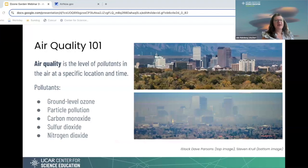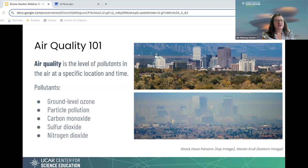Air Quality 101: what is air quality? It is the level of pollutants in the air at a time and location. The EPA in the United States tracks ground-level ozone, particle pollution, carbon monoxide, sulfur dioxide, and nitrogen dioxide. These are not an exhaustive list of pollutants, but they are the ones most tracked in the U.S. The picture here on the right shows Denver — the top image shows a much clearer image than the bottom one, so you can see the impacts of air pollution.